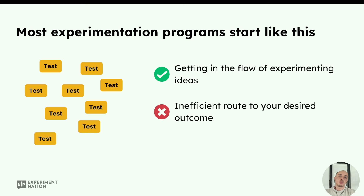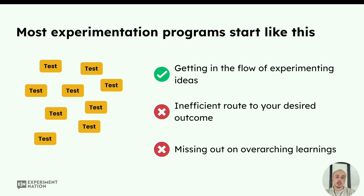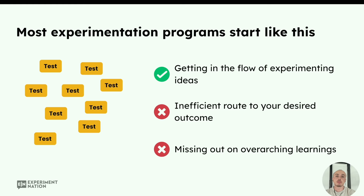However, it's not the most efficient route to their desired outcome, because maybe one test has a clear impact on an overarching goal, another test is maybe a bit smaller, and they're missing the direction of what test to focus on, which one has priority over another. They might also miss out on overarching learnings. If three tests on the left-hand side are focused on the same hypothesis or psychological tactic, by combining those test results and doing analysis on a higher level, on opportunity level, you could draw meta-learnings from multiple tests.